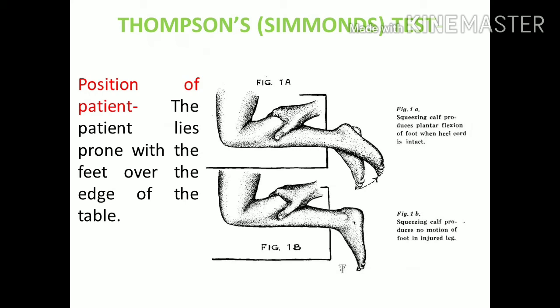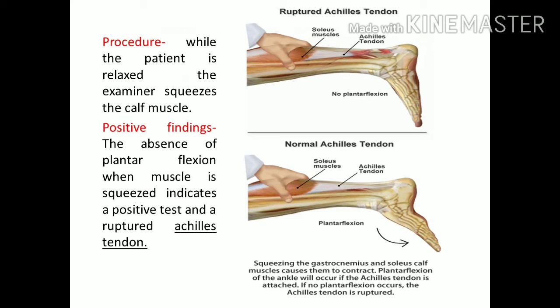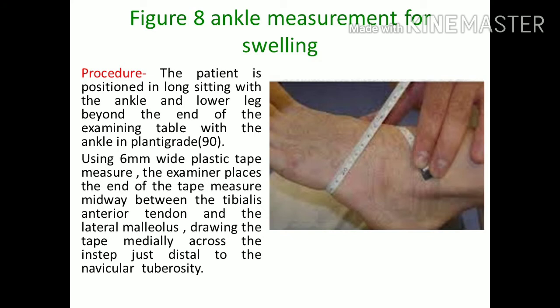The next tendon to check is the Achilles tendon — a very strong tendon lying posterior to the foot and attaching at the calcaneus. It functions as a plantar flexor. The test is the Thompson Test: the patient lies prone and the calf is squeezed. Normally, squeezing the calf produces plantar flexion at the ankle. If squeezing the calf produces no plantar flexion, it confirms a tear or injury to the Achilles tendon.